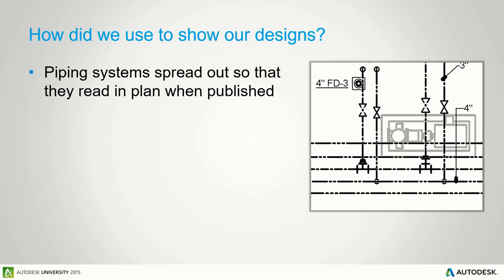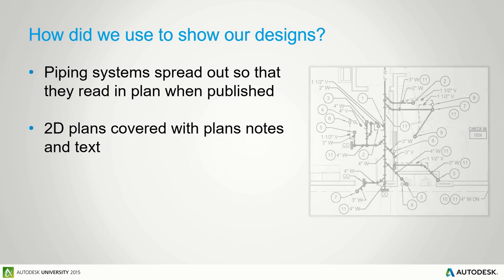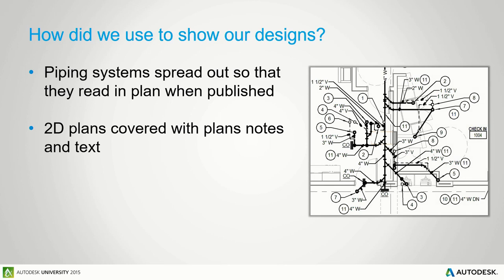If you have six one-inch domestic water lines laid out eight inches apart, and the architect gives you a small chase to fit everything in, it's not going to fit. You just can't design the same way in Revit as you did in CAD — you can't use the diagrammatic approach.